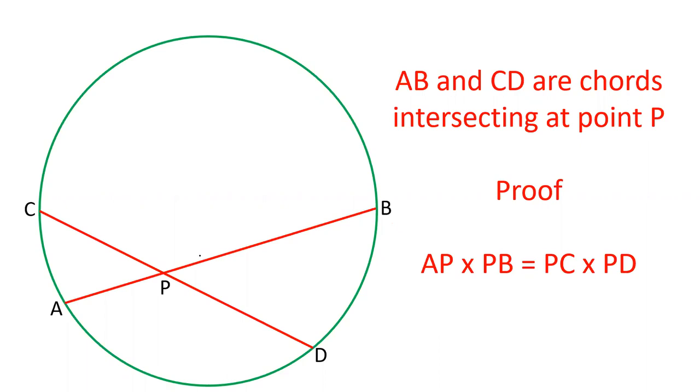In this video, I am going to explain the proof of the formula AP × PB = PC × PD. This formula is applicable when two chords intersect each other inside the circle at point P. The parts AP and PB, PC and PD are given, and we have to derive the relation between these four parts.